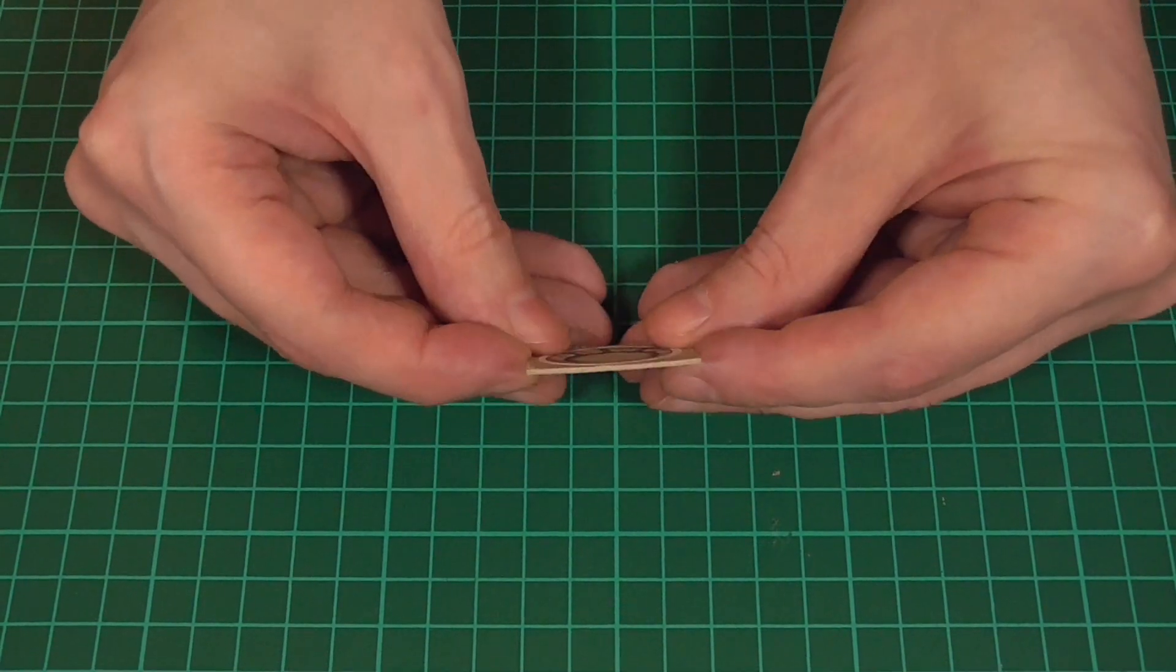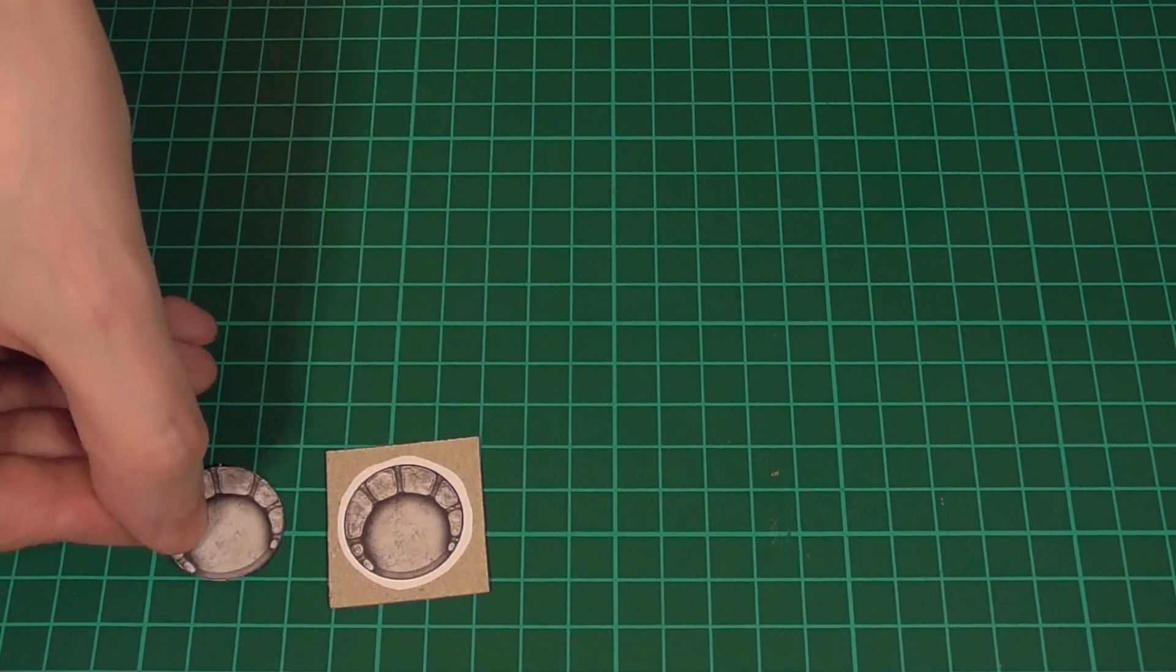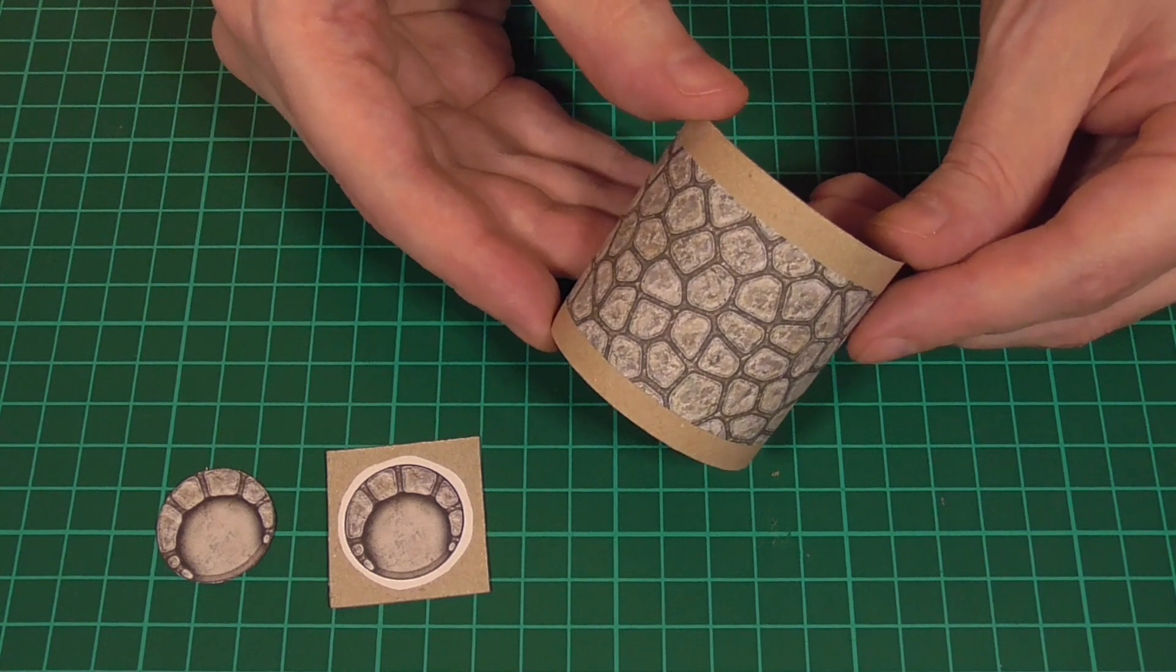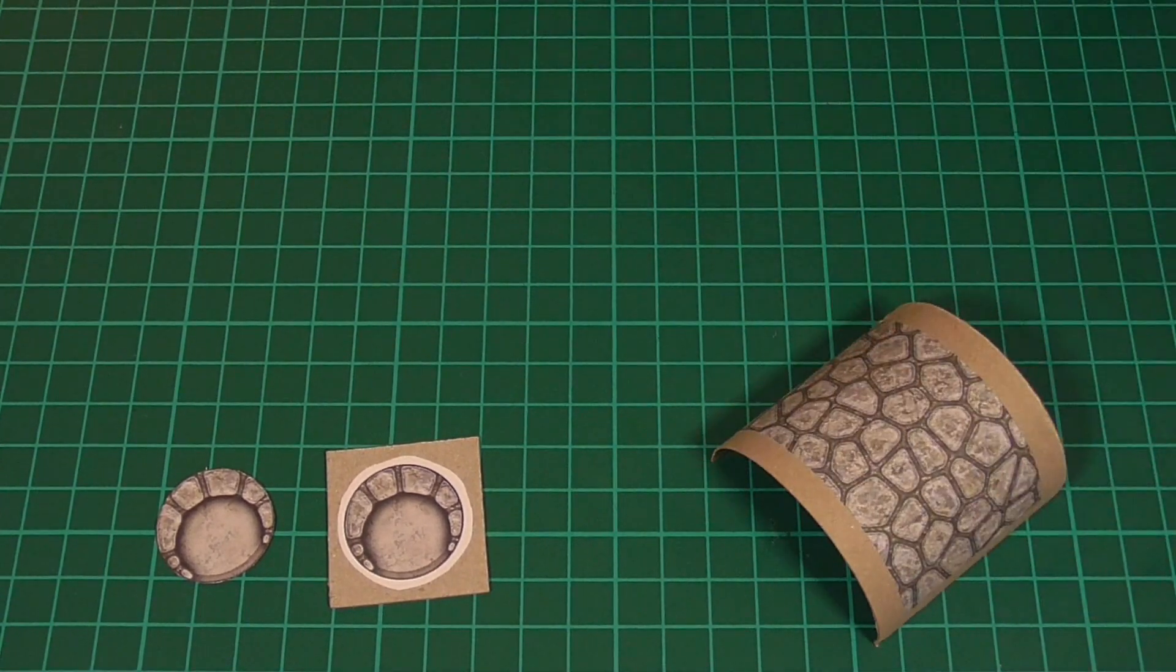For this last piece, we're first going to glue this texture to some more thick card, and then cut it out with a sharp pair of scissors. Then we'll take some of the regular wall texture and glue that around an empty toilet roll tube. If you're wondering, you can find this texture in the very first episode.